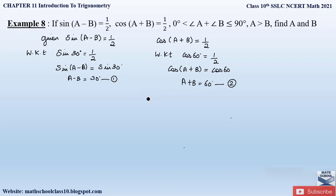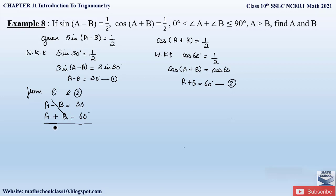Now from equations 1 and 2, we have A - B equals 30 and A + B equals 60 degrees. Adding these two equations, the minus B and plus B cancel, and plus A and plus A become 2A equals 60 plus 30, which is 90. So the value of A equals 90 divided by 2, giving us A equals 45 degrees.